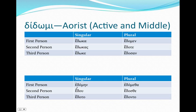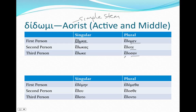The aorist is also slightly different. The first thing to notice is that it uses the simple stem — just 'do,' not 'dido.' Because it's the aorist, we've got an epsilon augment, a long stem, and then kappa-alpha: edōka, edōkas, edōke. These are just our normal aorist endings. Edomen, edote, edosan. So slightly different endings in the plural. Long singular, short plural — meaning omega or omicron.